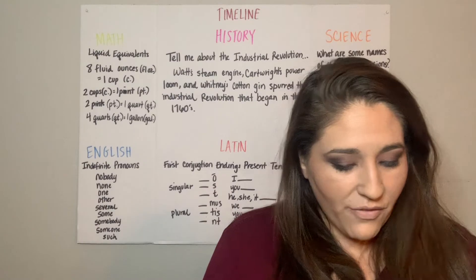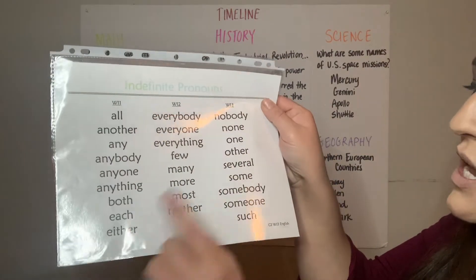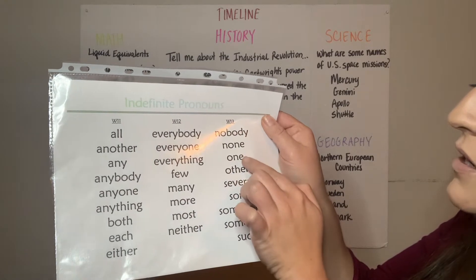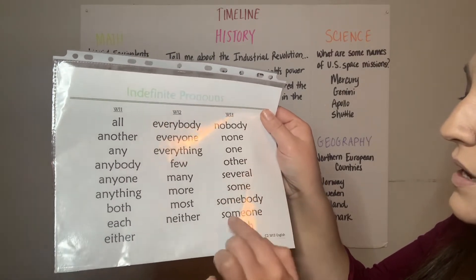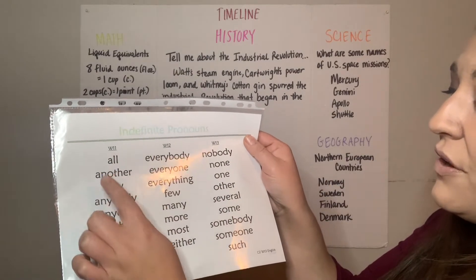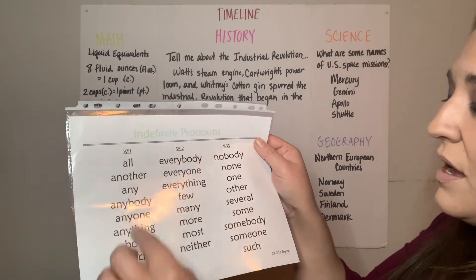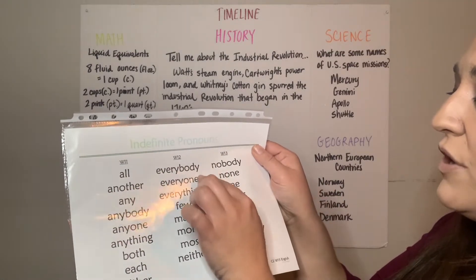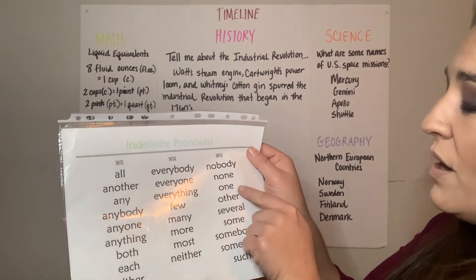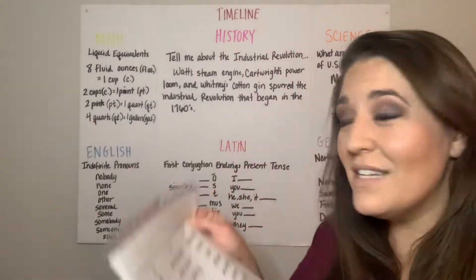To show all of the indefinite pronouns, where we start is with 'few' in week 12: few, many, more, most, neither, nobody, none, one, other, several, some, somebody, someone, and such. And if you put all of them together: all, another, any, anybody, anyone, anything, both, each, either, everybody, everyone, everything, few, many, more, most, neither, nobody, none, one, other, several, some, somebody, someone, and such — those are all of our indefinite pronouns.